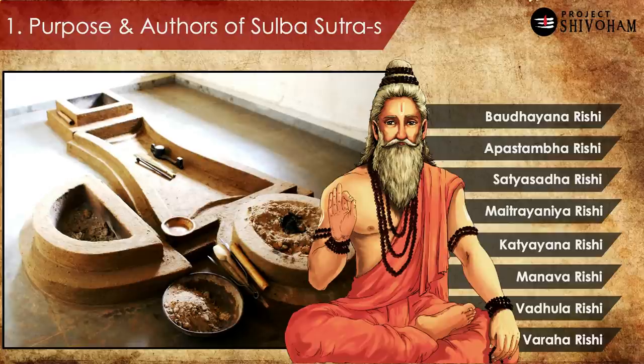Baudhayana, Apastambha, Satyasadha, Maitrayana, Katyayana, Manava, Vadhula, Varaha — all these are the great rishis who authored Sulbhasutras, and each of them had their own way of dealing with the geometrical principles needed for construction of these Vedic fire altars.